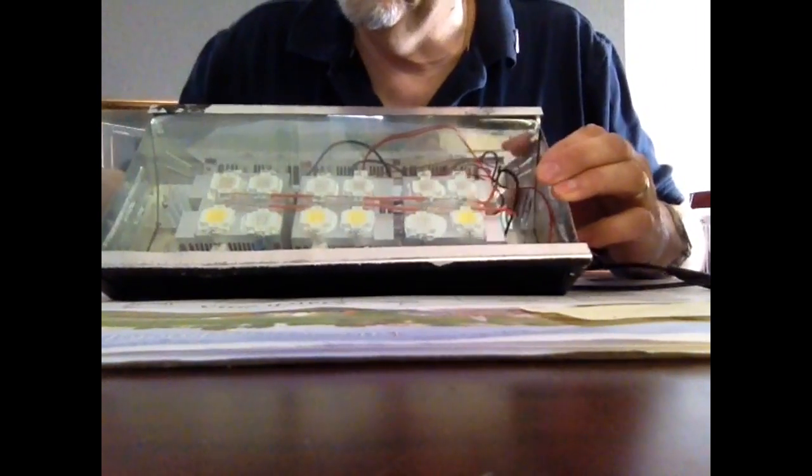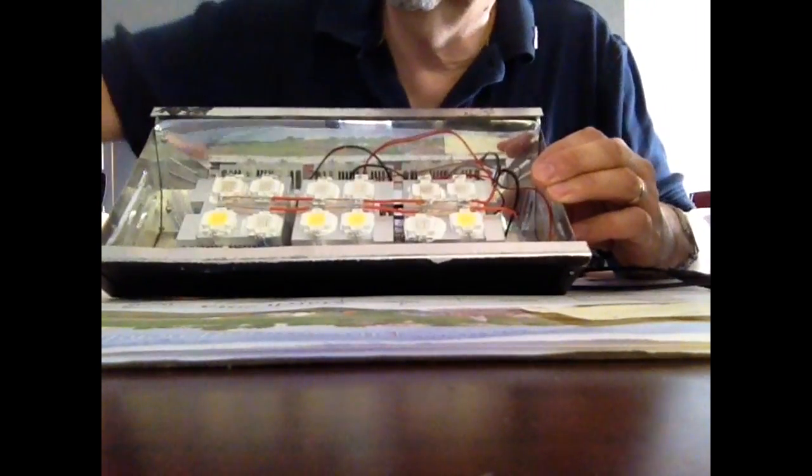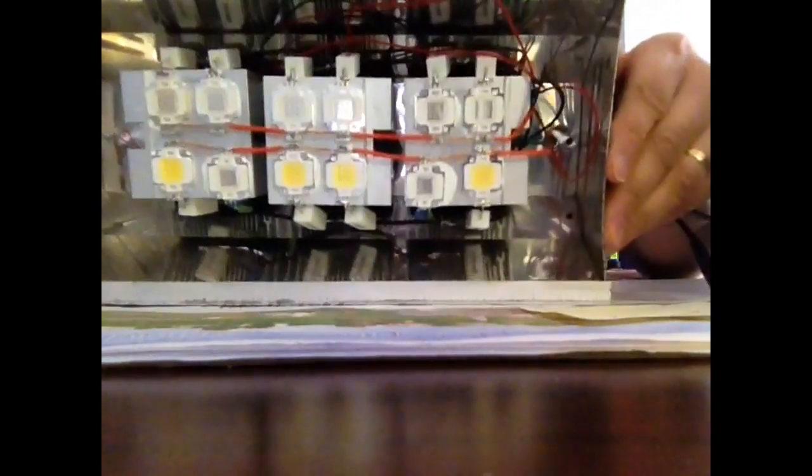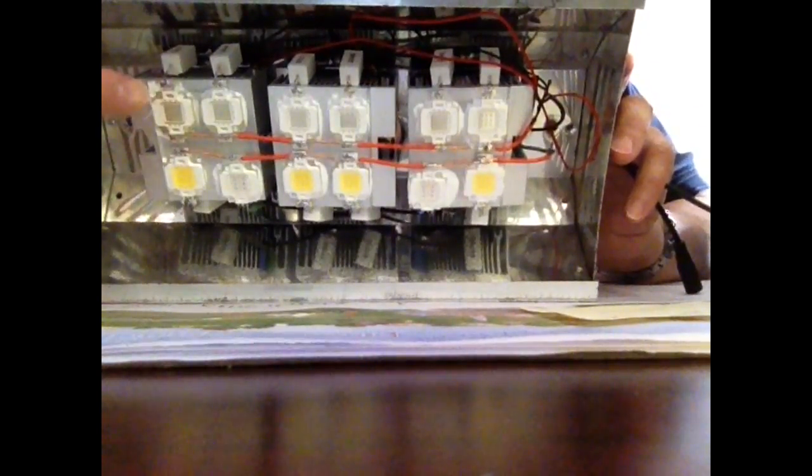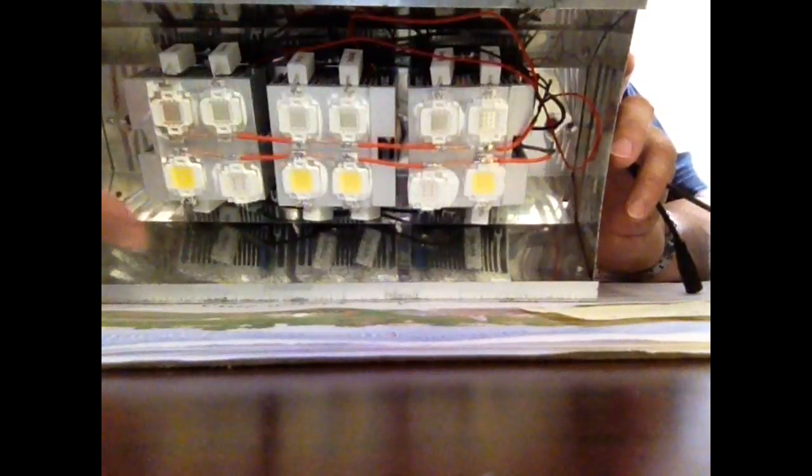On the inside here, let me get the glass off so you can see a little better. Inside here we've mounted the three heat sinks with the fans, and I've got two rows of six LEDs.